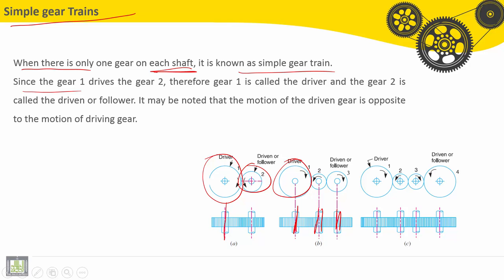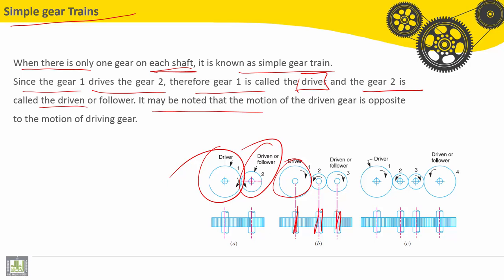Since Gear 1 here, for example, drives Gear 2, therefore Gear 1 is called the Driver. The input here is called Driver, and Gear 2 is called Driven. This is the output or Follower.